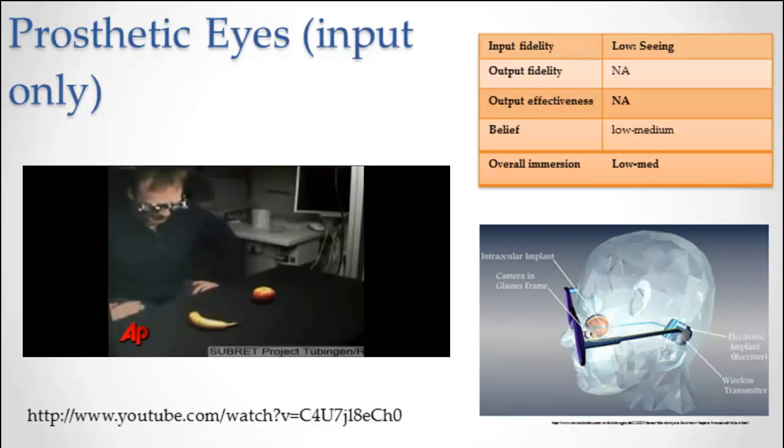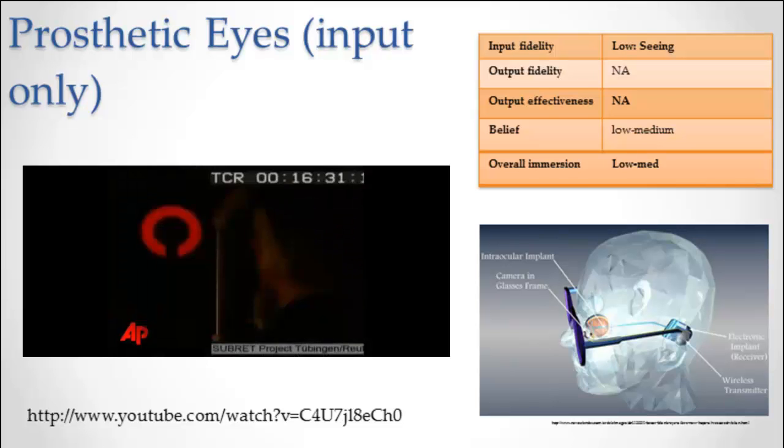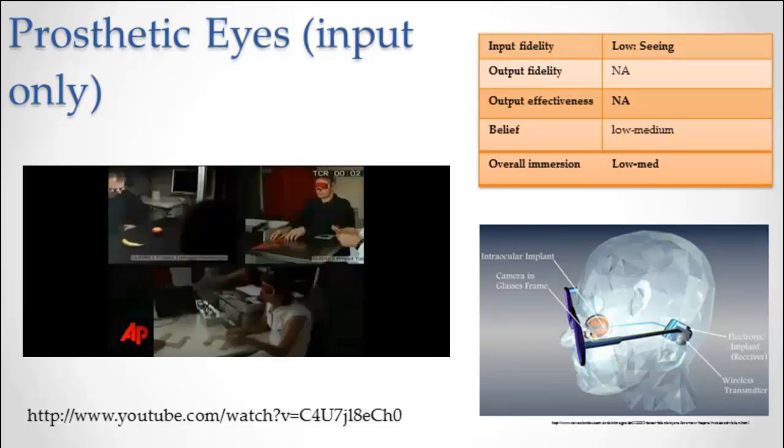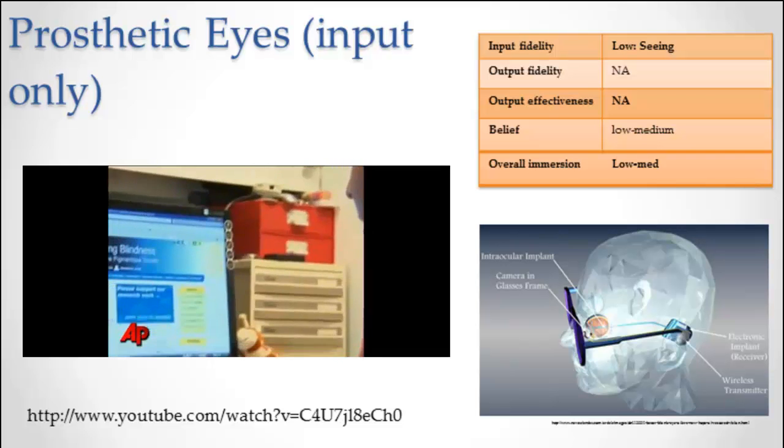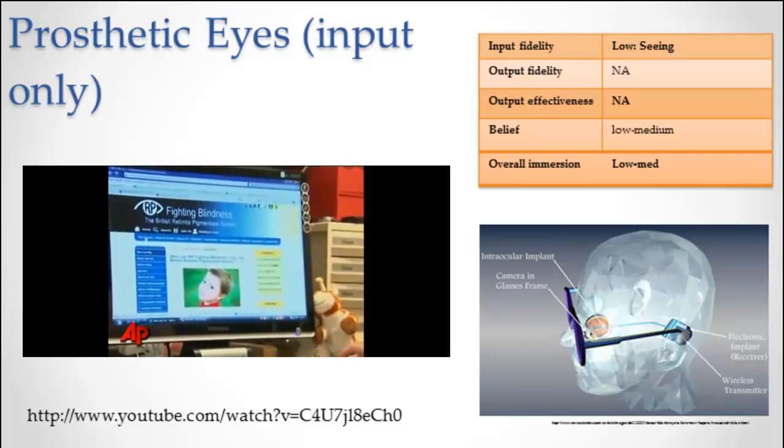This man can see again, at least somewhat, all thanks to a groundbreaking retinal implant. Research teams in Germany have been working on a way to combat a genetic disease that kills off light-sensitive cells in the eye, leaving the person blind. They came up with an electronic chip that's implanted in the retina.